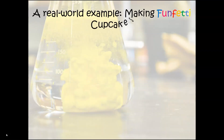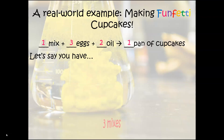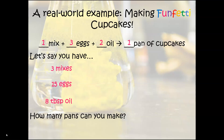Here's an example using funfetti cupcakes — my favorite. This represents our balanced equation: to make one pan of cupcakes, I need one box of mix, three eggs, and two tablespoons of oil. At home I have three boxes of mix, fifteen eggs, and eight tablespoons of oil. I want to figure out how many pans I can actually make for my students — that's where the limiting reactant comes in.